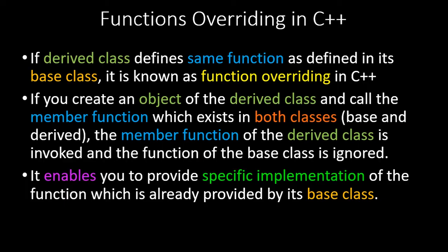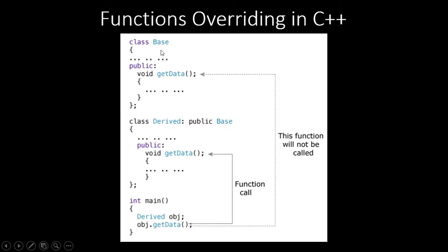Let's look at a diagrammatic representation. We have a class 'Base' with a public void 'getData' function. Then we create a derived class that publicly inherits Base. Inside the derived class there is also a 'getData' function. Notice that the rules of function overloading do not apply here — the function signature is exactly the same; it's simply a case of inheritance.